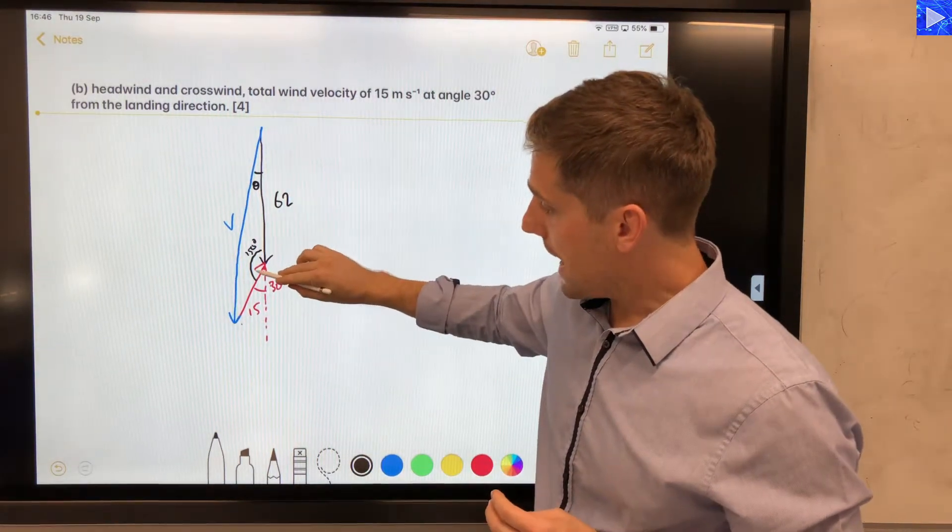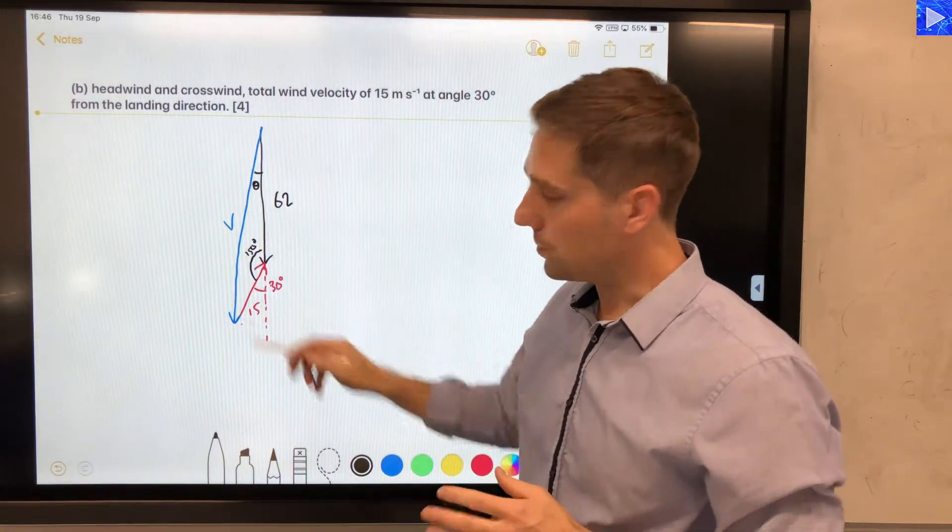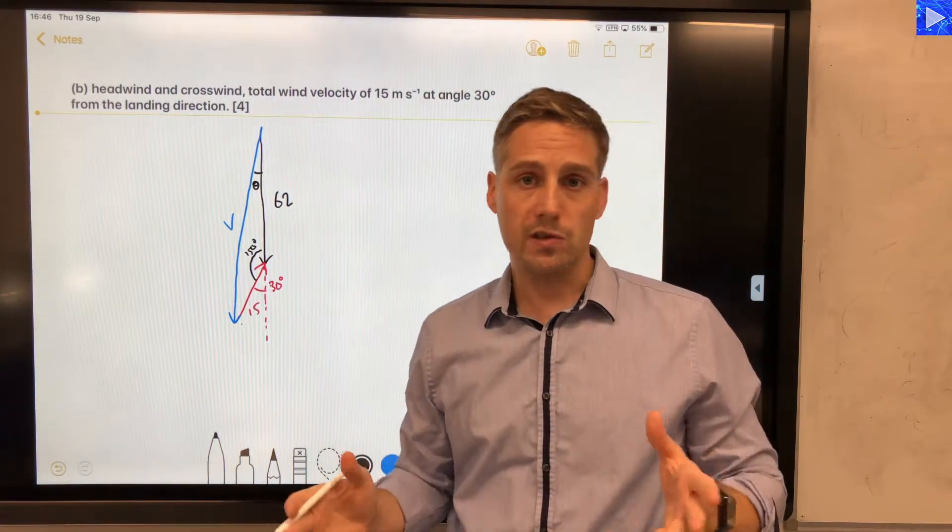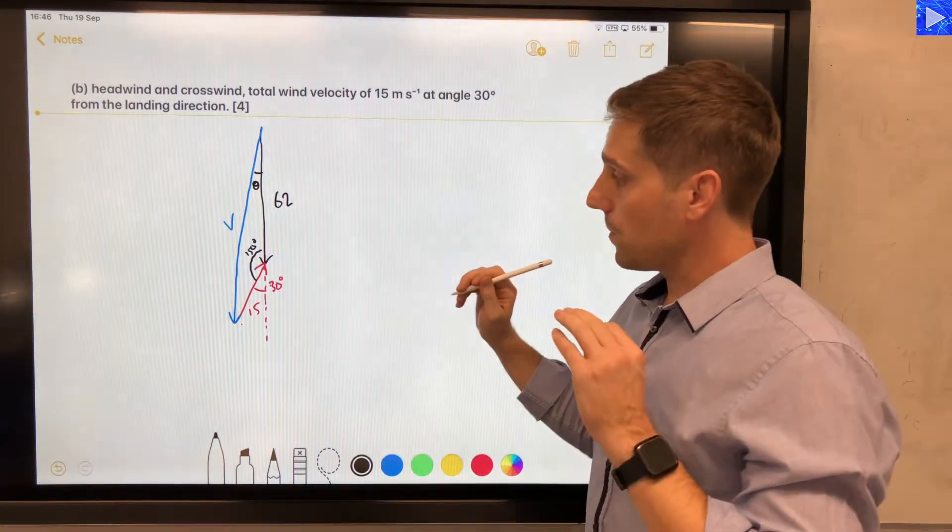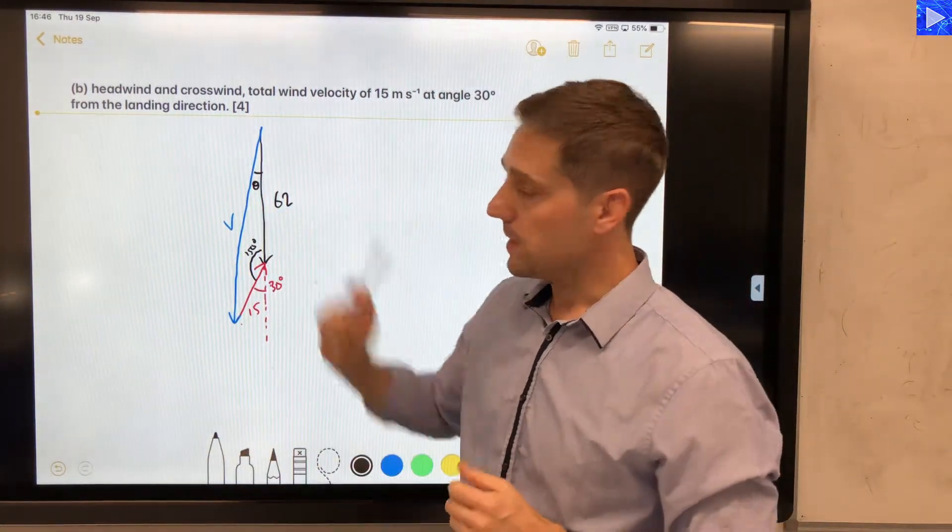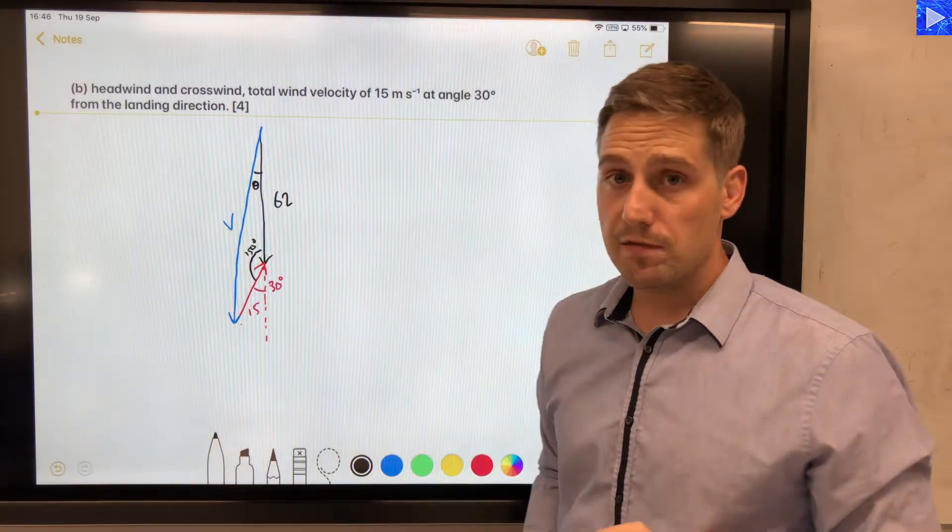And we of course want to know the size of the velocity vector. Since we don't have a right angle triangle, but we do know one angle which is opposite the desired side and we know two sides, we can use the cosine rule. Cosine rule will give us V and then we can use the sine rule to determine the unknown angle theta. So that's the method I'm going to use.